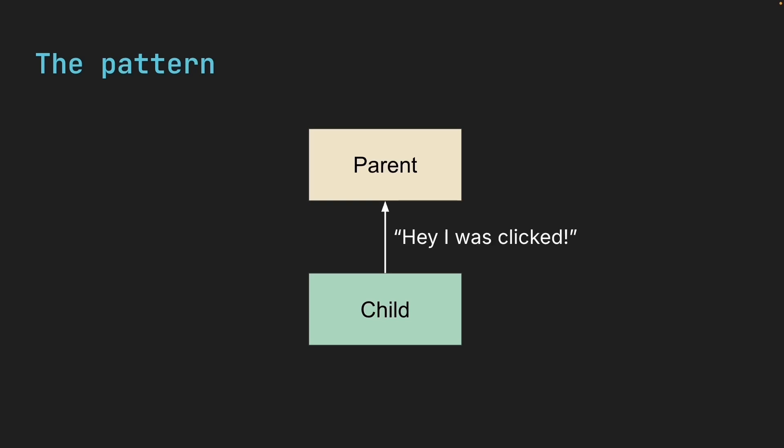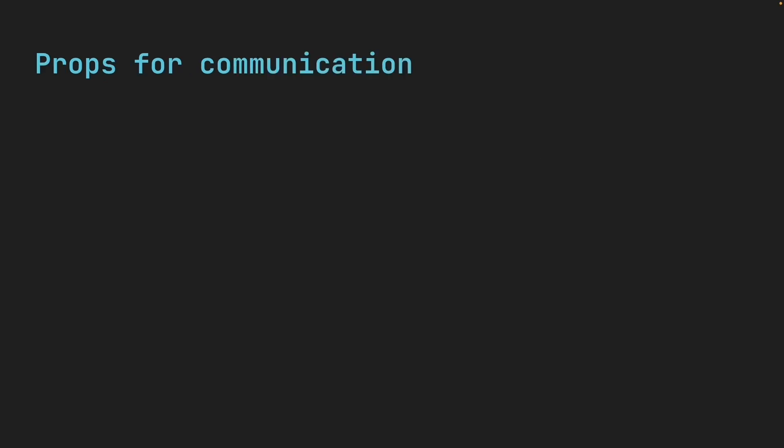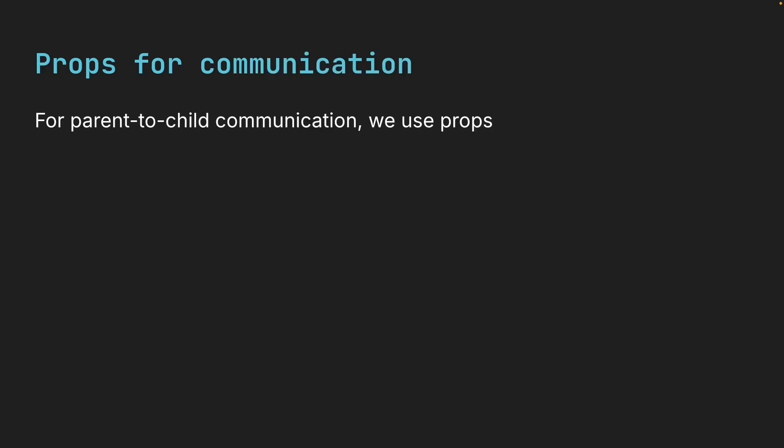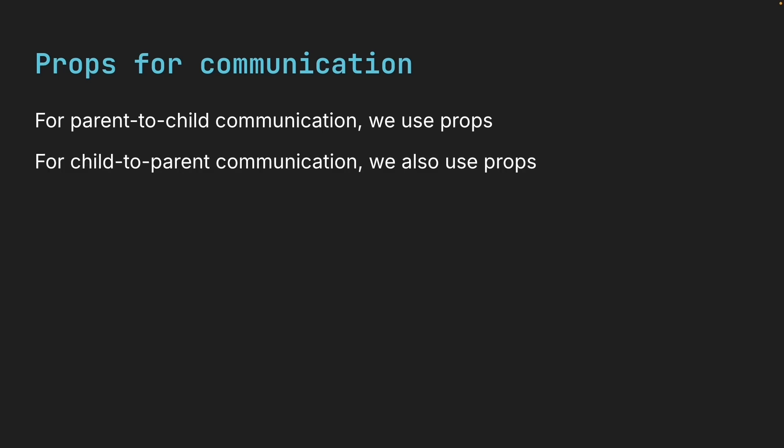Then the parent can execute whatever logic it needs. You already know that for parent to child communication we use props. But here's what might surprise you — for child to parent communication, we also use props. But this time, we pass event handlers as props. Let me show you exactly how this works.